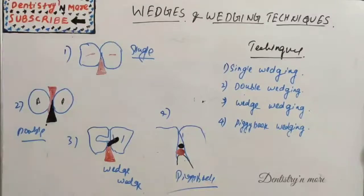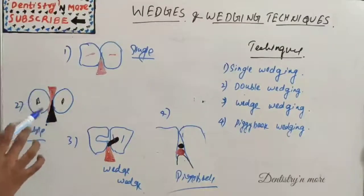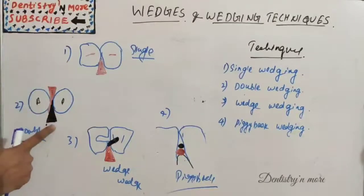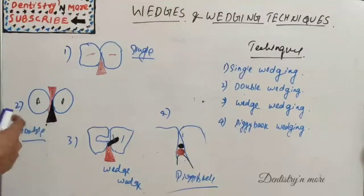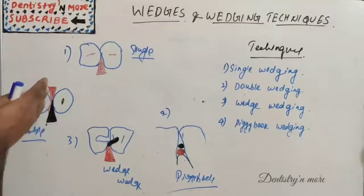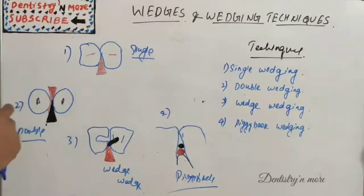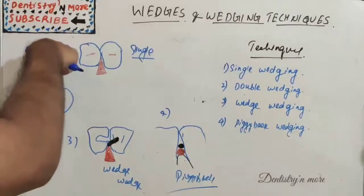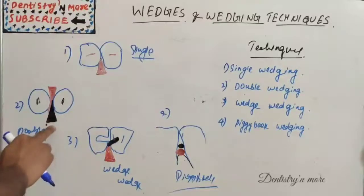The second technique is double wedging, where two wedges are used — one inserted from the buccal embrasure and another from the lingual embrasure. This technique is indicated when the spacing between the wedge and teeth is wider and a single wedge is not sufficient. When the proximal box is widened in the buccolingual dimension, we need two wedges — one from buccal and one from lingual.